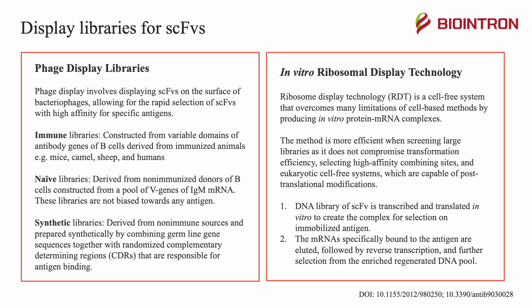There are two common display libraries for single-chain variable fragments. The first is phage display libraries, which involves displaying SCFVs on the surface of bacteriophages, allowing for rapid selection of SCFVs with high affinity for specific antigens. There are three common types: immune libraries, constructed from variable domains of antibody genes of B cells derived from immunized animals such as mice, camel, sheep, and humans; naive libraries, derived from non-immunized donors and constructed from a pool of V genes of IgM mRNA, which are not biased towards any antigen; and synthetic libraries, derived from non-immune sources and prepared synthetically by combining germline gene sequences with randomized complementarity-determining regions (CDRs) responsible for antigen binding.